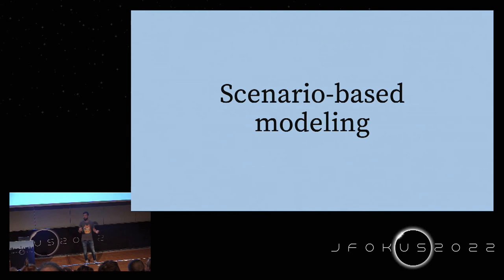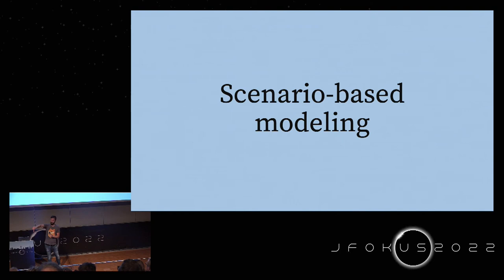Typically we have several stories. In this example we start with the good case — the 80% case of leasing a car — and then model what happens if the risk manager says the risk is too high. That's another story, modeled in another picture. This is of course very different from BPMN, where you have gateways and put different cases in one model.